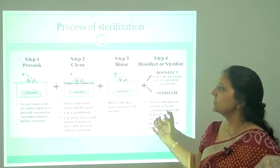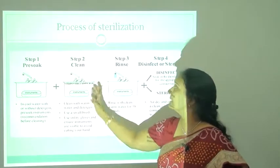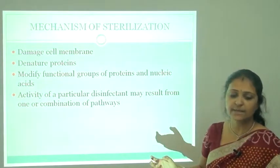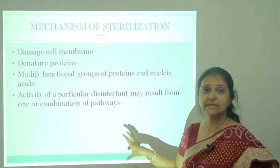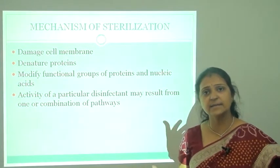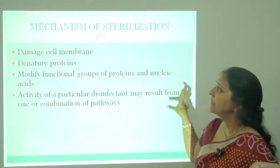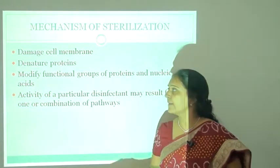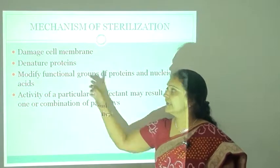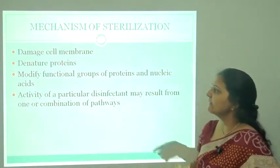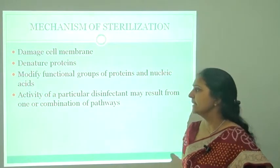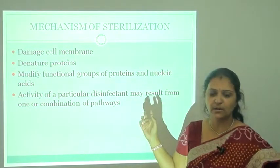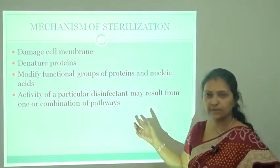The sterilization process steps are: pre-soak, then cleaning, then rinsing, and then application of the disinfection or sterilizing agent. The mechanism of sterilization remains the same regardless of the method used. The sterilizing agent may damage the cell membrane, denature proteins, modify functional groups of proteins and nucleic acids, and the activity of a particular disinfectant may result from one or a combination of these pathways.